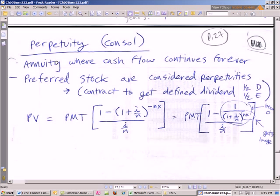So this is an annuity, and if it's an annuity, that means equal cash flows, equal time periods between each cash flow. So it's an annuity where cash flows continue forever. Preferred stock are considered perpetuities, and preferred stock just means there's some amount of money that you're going to get each period, and so it fits the bill of an annuity.